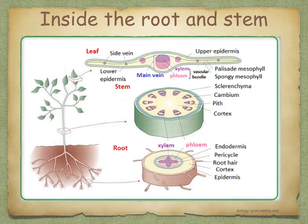Xylem vessels and phloem tubes are usually found together. A group of xylem vessels and phloem tubes is called a vascular bundle. Looking at this diagram, you can see that in the root, the xylem and phloem in the vascular bundles are towards the centre, whilst in the stem the vascular bundles are located towards the edge. The vascular bundles continue all the way into the leaf — if you cut through a leaf, you'll see the main vein comprises xylem and phloem.